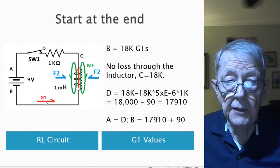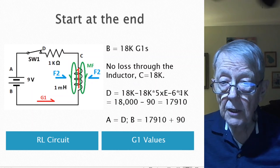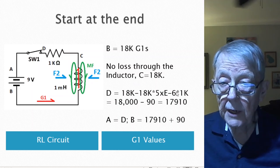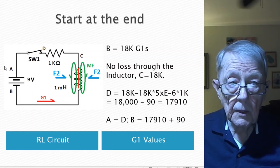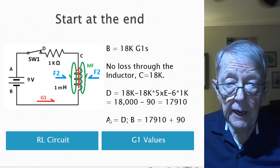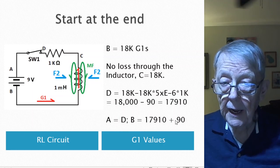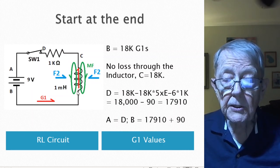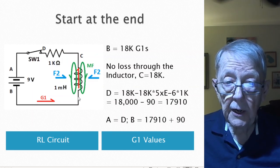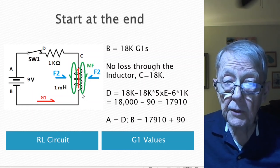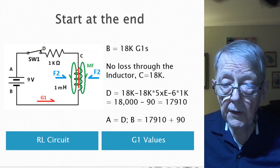The G1s in that case, when you're at the end steady state, they flow straight through. And so, you have 18,000 coming into the resistor, and you have a loss to the resistor, which is equal to the number N times the interaction factor times 1K, which is 90. And so D ends up being 17,910. That's D, which is A is equal to D for the next cycle. And then B adds 90 to get back to the 18K. Stable circuit. No G1s are lost in the inductor. There is no voltage drop across that, because when the value here equals the value here, there is no loss of G1s.